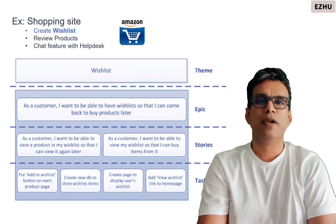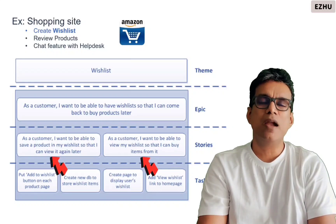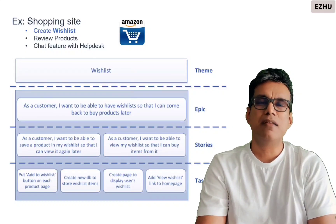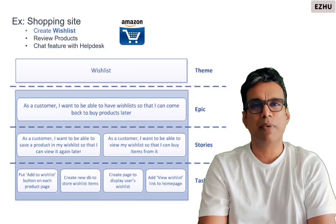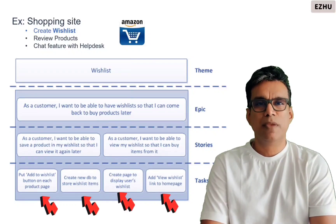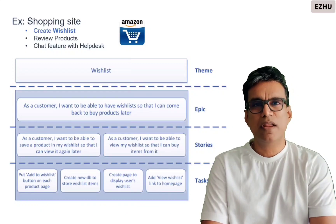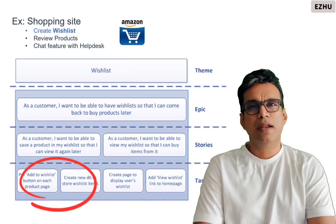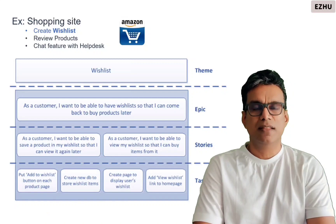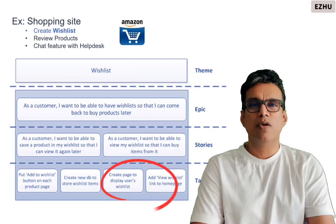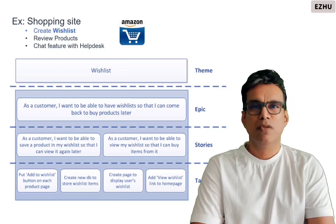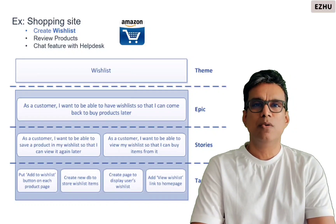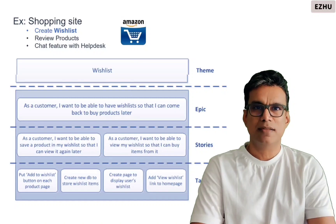This epic can be further split into stories. The first story is: able to add products into the wish list. The second story is: able to come back, view it on a later date, and then purchase it. Each of these stories can further be broken down into tasks. For the first story, I need to create a button to add the product and a database to store the wish list items. The second story breaks down into creating a wish list page and adding a link on the home page.